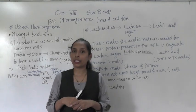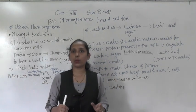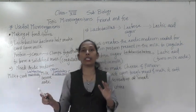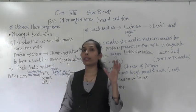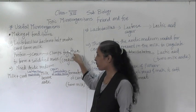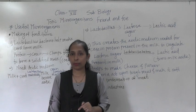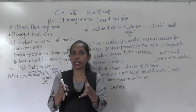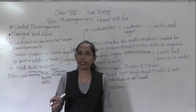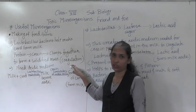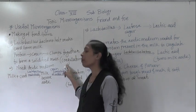Curd can be made when casein protein is present in milk. If casein protein is present in milk, then only the formation of curd happens. When casein protein is present, the protein clumps together to form a solidified mass. That process is called coagulation — the casein protein comes together into a solidified mass, and that process is called coagulation.